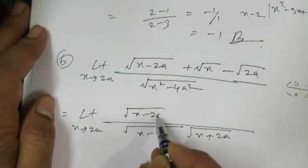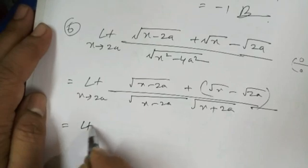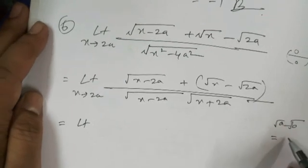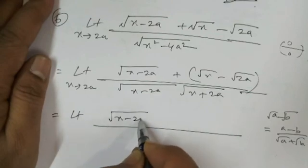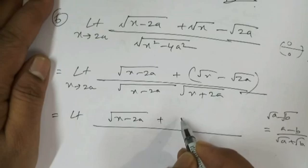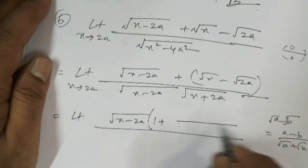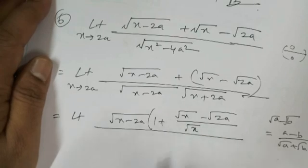Factorize the denominator: √(x² - 4a²) = √[(x - 2a)(x + 2a)]. In the numerator, use the identity √x - √(2a) = (x - 2a)/(√x + √(2a)). Taking √(x - 2a) as a common factor from the numerator, we get √(x - 2a)[1 + √(x - 2a)/(√x + √(2a))] over √(x - 2a)·√(x + 2a).